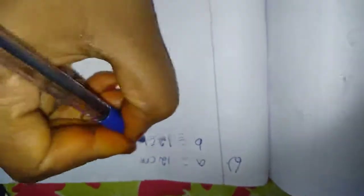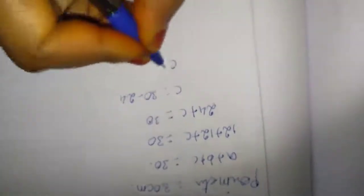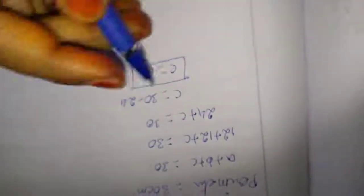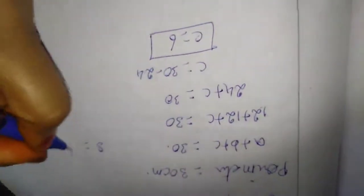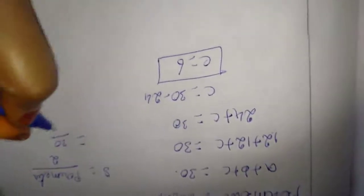A equal to B equal to 12 centimetre, because this is an isosceles triangle. Perimeter equal to 30 centimetre. Using the perimeter formula: A plus B plus C equal to 30. Substituting: 12 plus 12 plus C equal to 30, so 24 plus C equal to 30, therefore C equal to 30 minus 24, C equal to 6. Before going to the area formula, we find S. S equal to perimeter divided by 2 — 30 divided by 2 is 15.